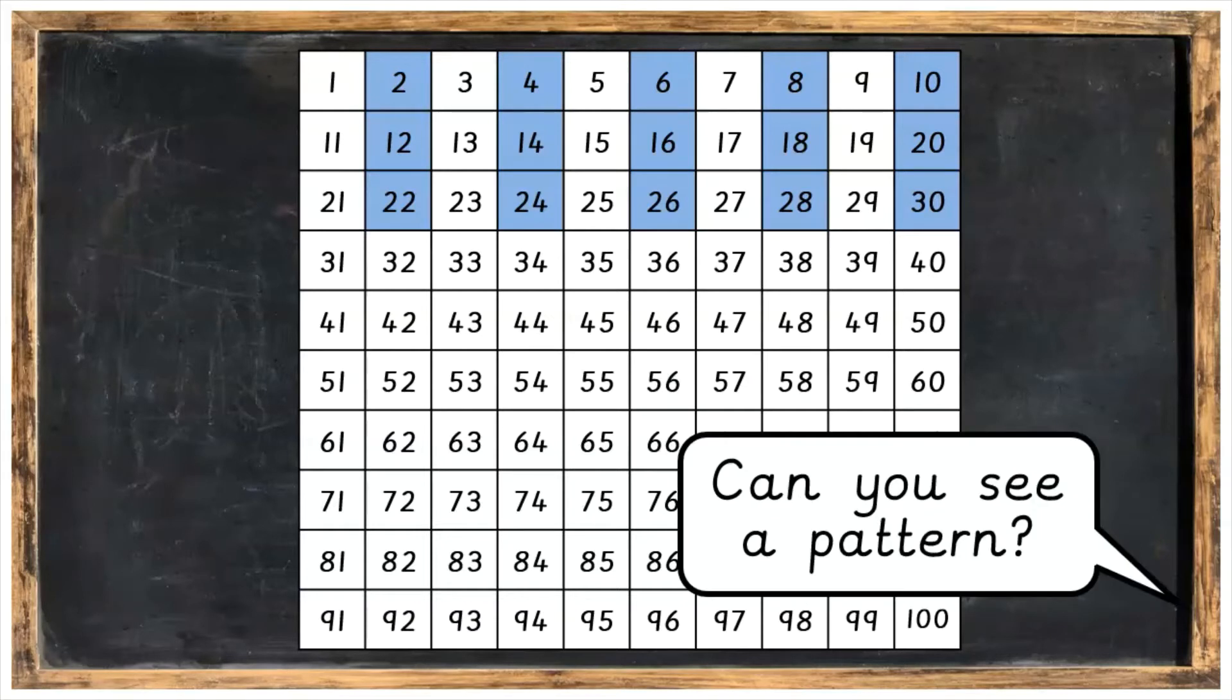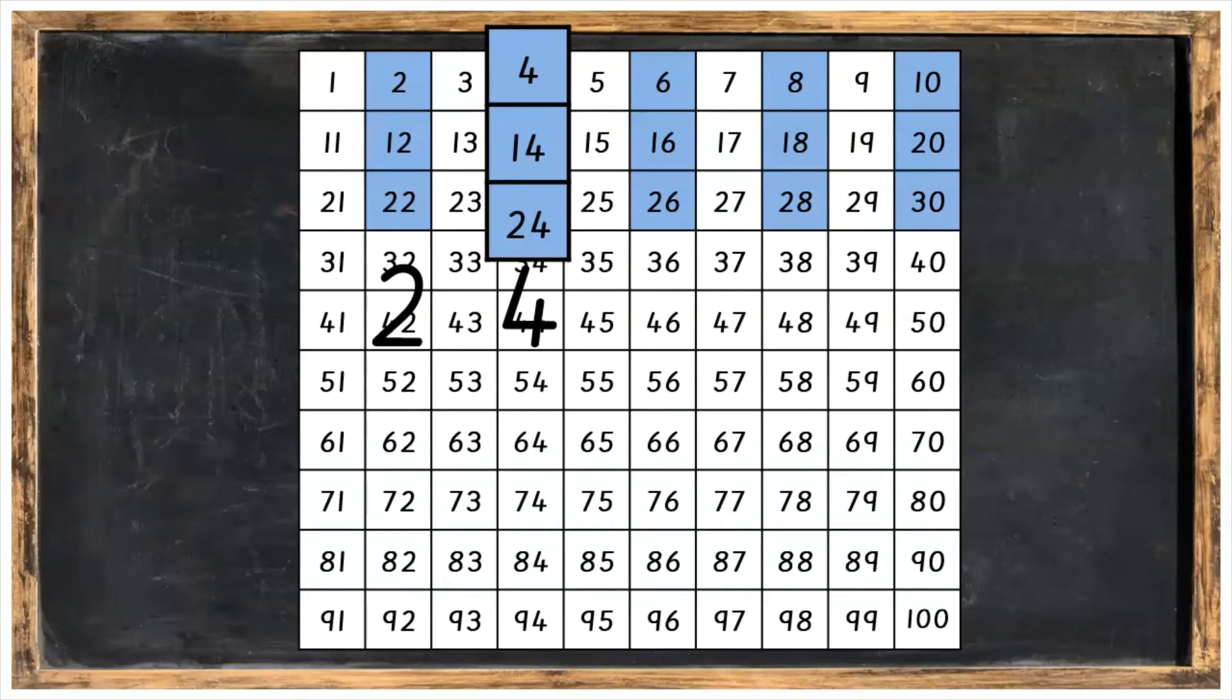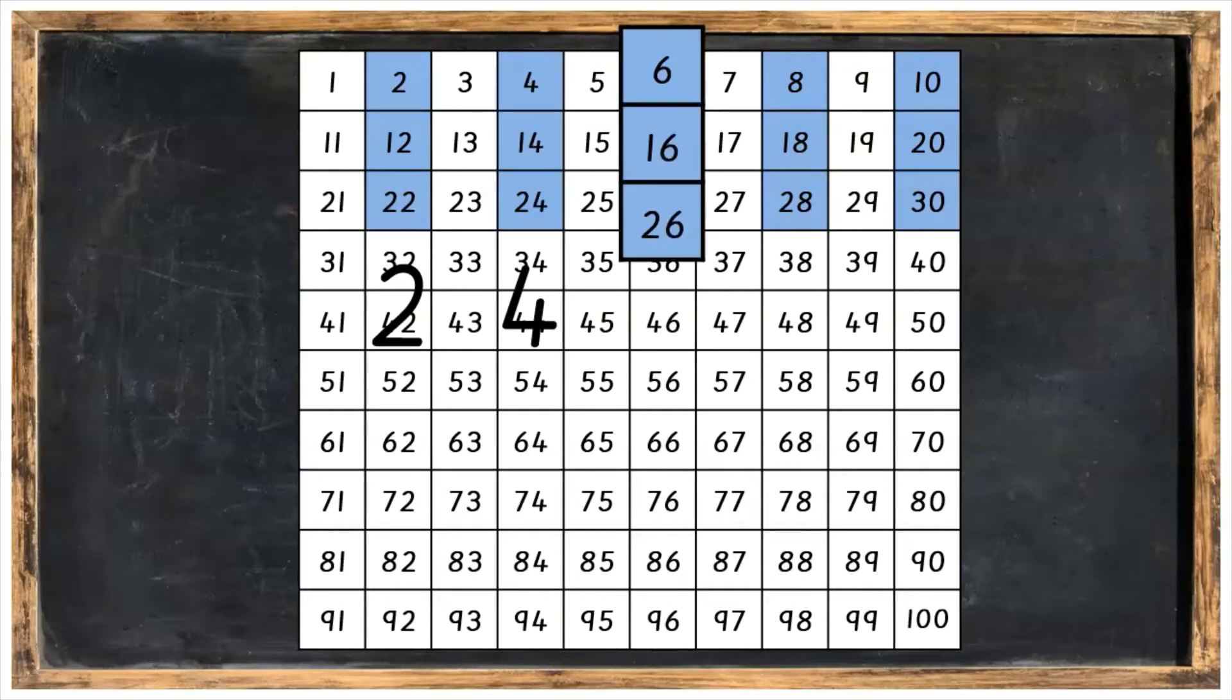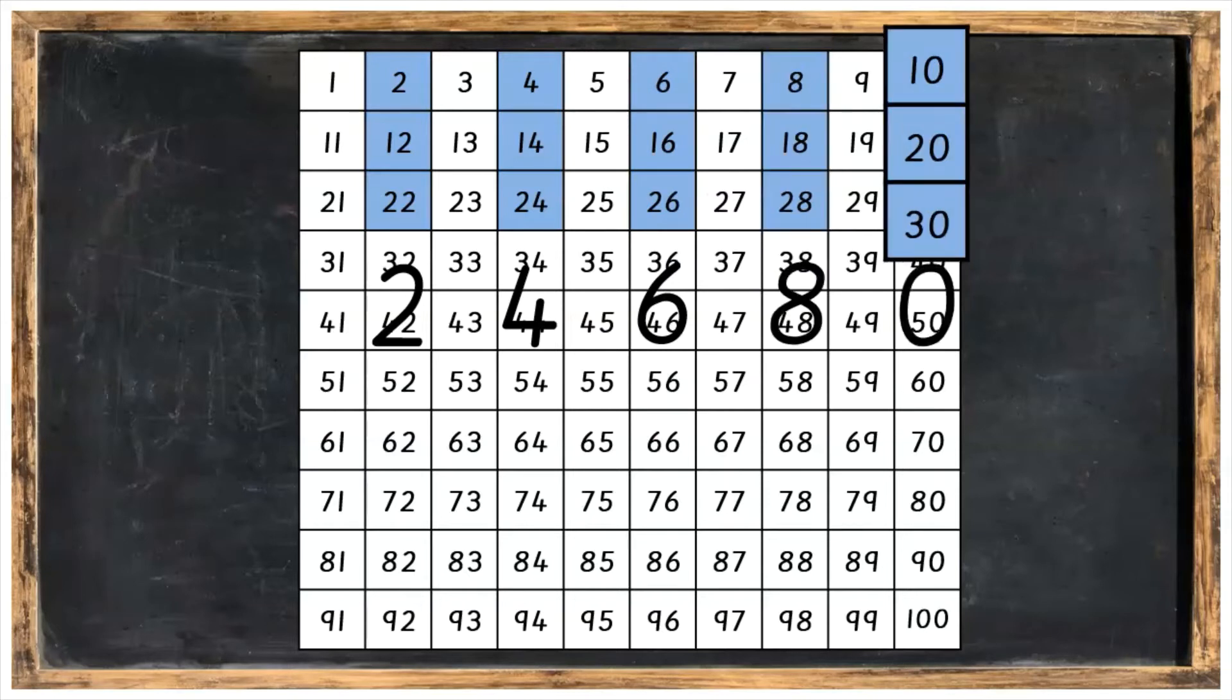Can you see a pattern here? You might have noticed that all the numbers in this column end in a two. Then all the numbers in this column end in a four. All the numbers here end in a six. All the numbers here end in an eight and all the numbers here end in a zero.